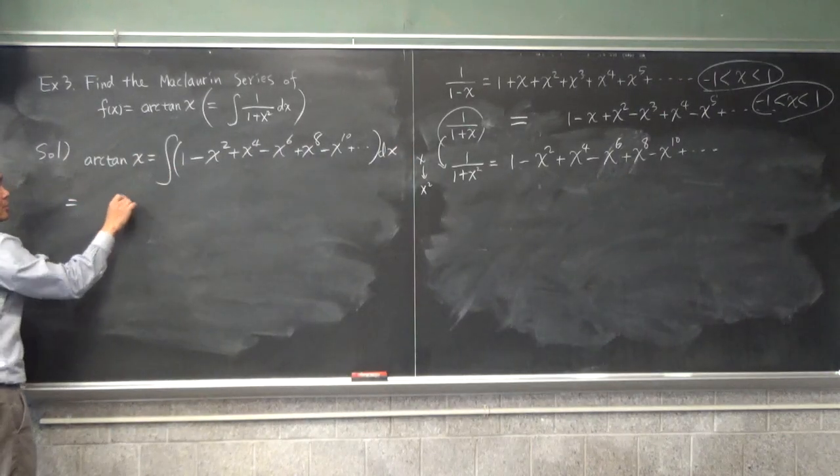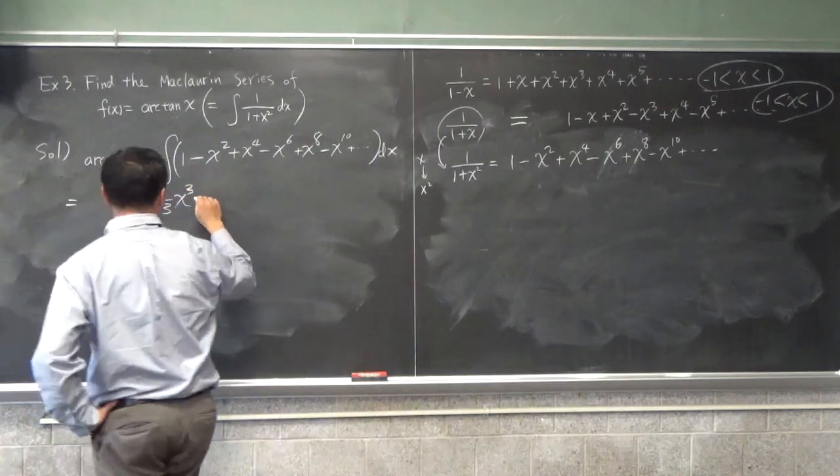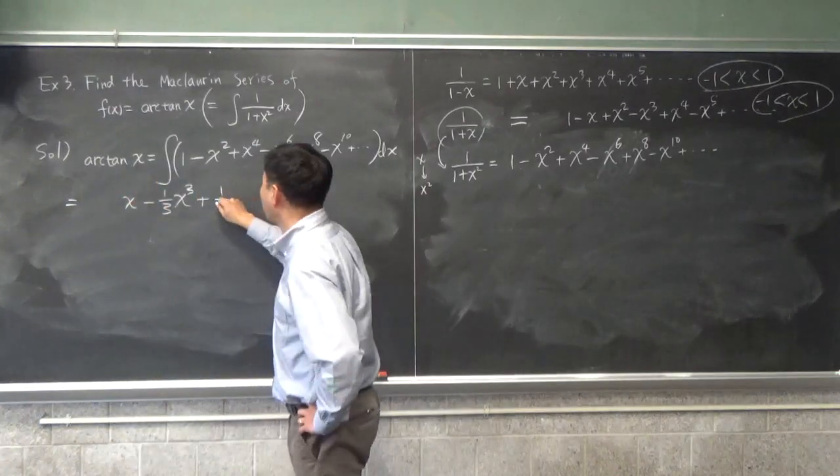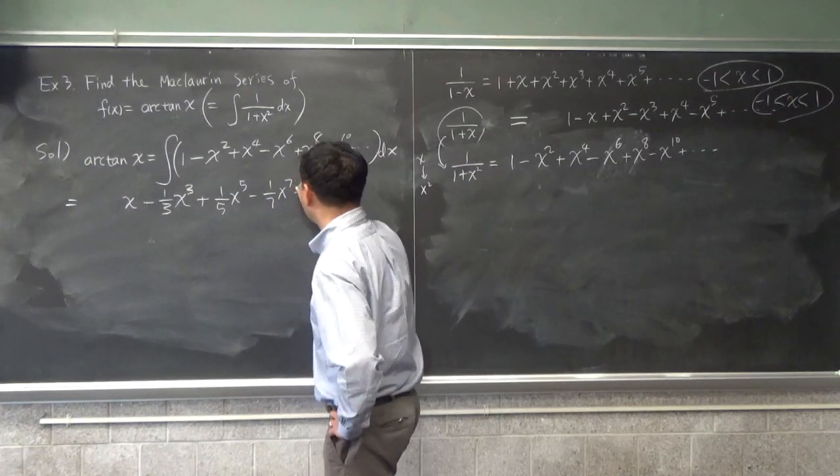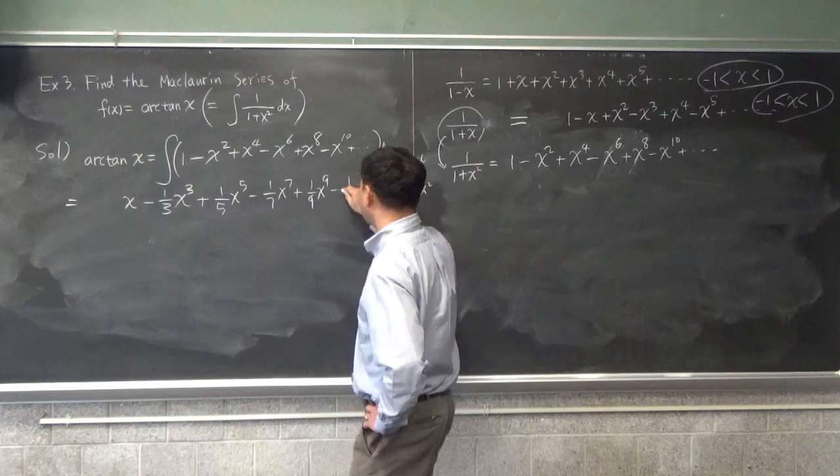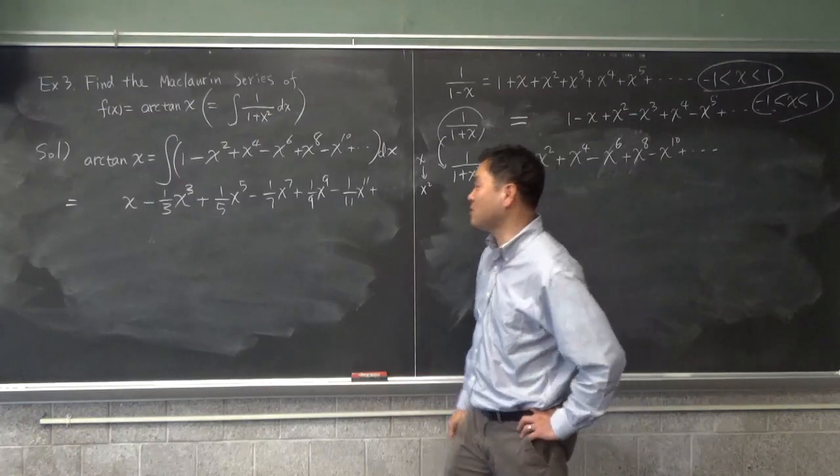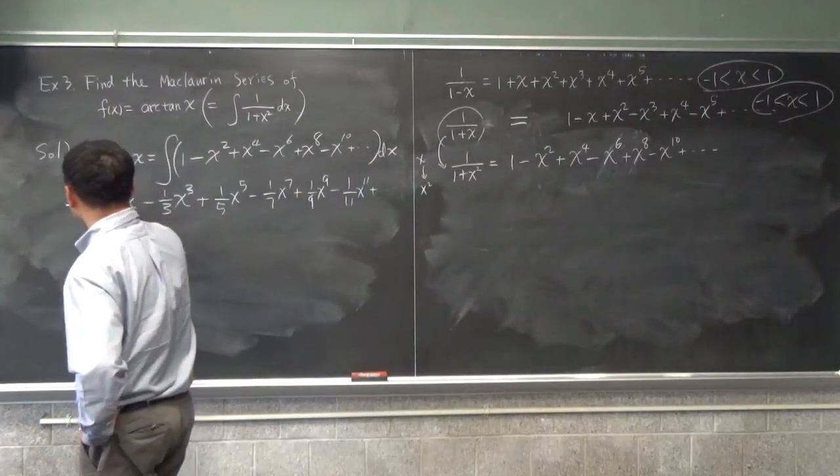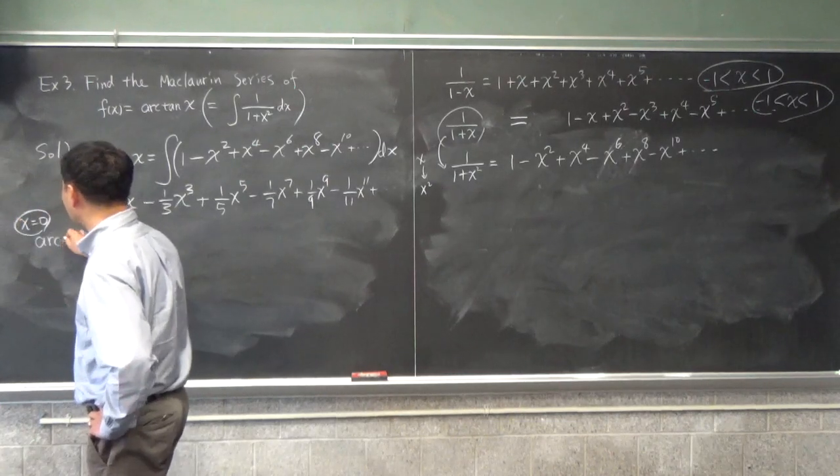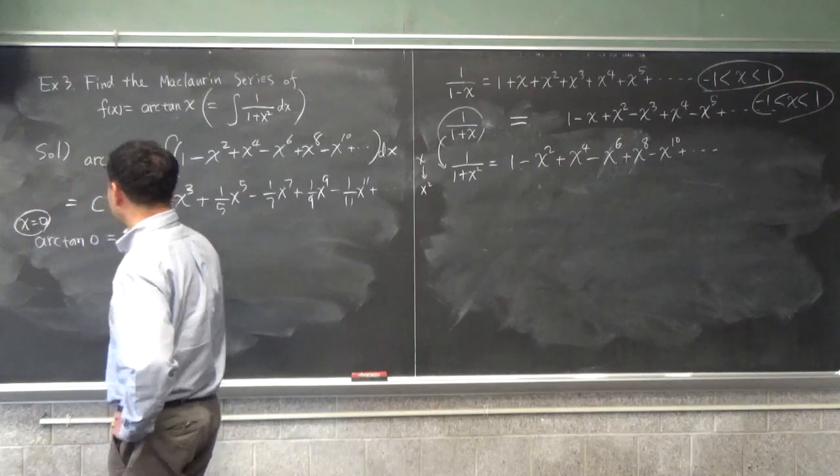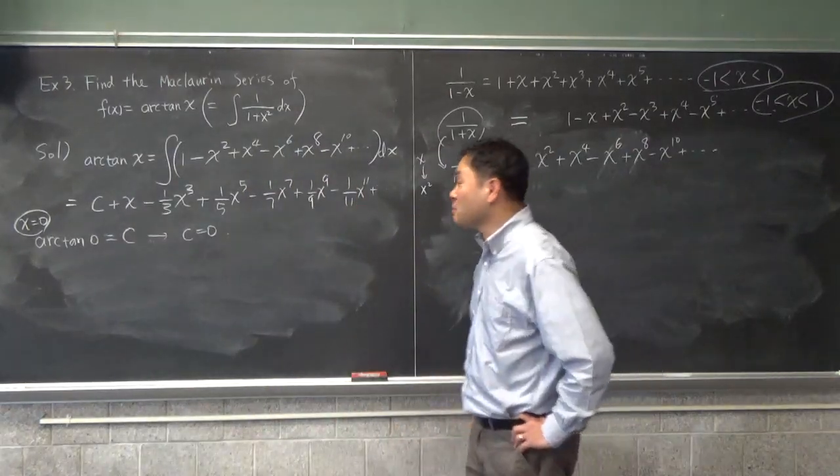Now, therefore, we can say that arctangent of x is the integral. Since it's the integral of this, it must be the integral of 1 minus x squared plus x to the 4th, minus x to the 6th, plus x to the 8th, minus x to the 10th, plus da-da-da, dx. Let's now integrate that. 1 integrates to x. X squared integrates to minus 1 3rd x cubed. And then the next one, plus 1 5th x to the 5th, minus 1 7th x to the 7th, plus 1 9th x to the 9th, minus 1 over 11 x to the 11th, plus da-da-da. And then I forgot to do what? Plus c.